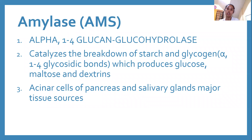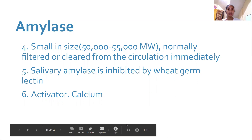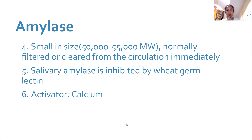Amylase can be very non-specific for acute pancreatitis, because if a person has lesions or diseases in their salivary glands, amylase can also rise. Amylase is actually low in molecular weight, so it is normally filtered in the urine. However, in cases where amylase binds to an immunoglobulin or there is kidney failure, amylase in the urine decreases. This is why we have the amylase-creatinine ratio — to check the clearance of amylase and creatinine by the kidney.